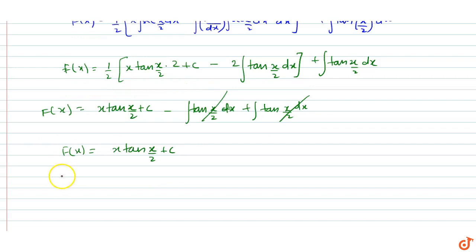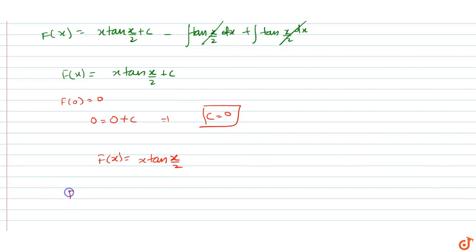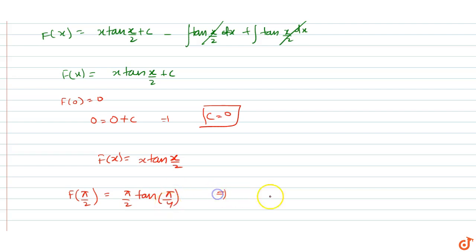Now we are given f(0) = 0, which means 0 = 0 + C, so C = 0. Therefore f(x) = x·tan(x/2). Now we find f(π/2), which equals (π/2)·tan(π/4). Since tan(π/4) = 1, f(π/2) = π/2. So this is our answer.